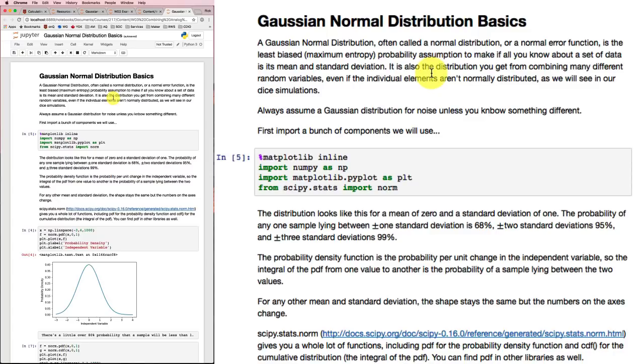And that distribution is often a centrally biased distribution, a centrally weighted distribution, and it usually looks a lot like a Gaussian normal distribution. So for that reason, we want to find out a little bit more about what a Gaussian normal distribution looks like and what its properties are.